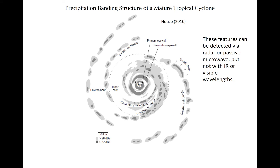Rain bands then spiral outward from the center, sometimes several hundred kilometers away from the eye. The principal rain band is the largest, is directly connected to the core, and is sometimes contiguous with the secondary eye wall. The bands consist of convective precipitation, denoted by the dark shading, and weaker stratiform-like precipitation elsewhere in the rain bands.